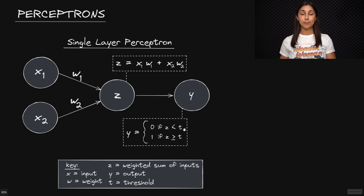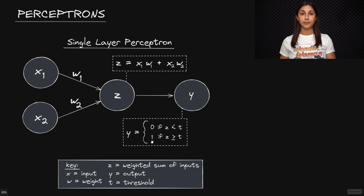When we compare Z to the threshold, which we're calling T: if Z is less than T, then Y is going to be equal to zero. And if Z is greater than or equal to the threshold T, then Y will equal one.